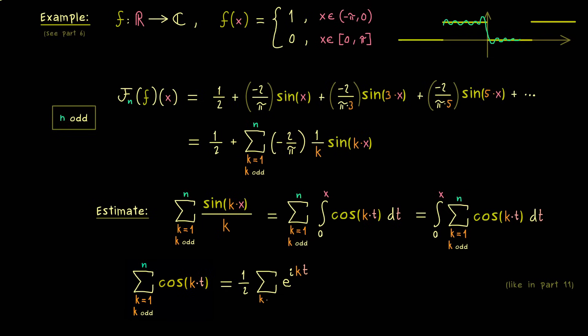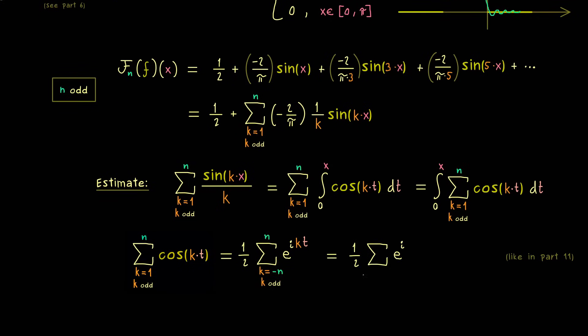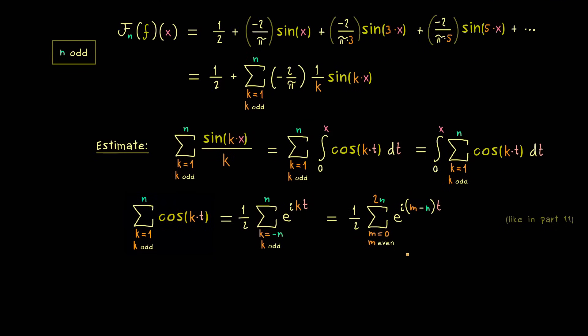And since we get two exponential functions, one with a minus sign one with a plus sign, we can just go with the sum from minus n to plus n. But please don't forget we still just sum up the odd case. Okay, then quickly the next step: there we want to shift the sum by n so now we sum from 0 to 2n. Which means inside the exponential function we have m minus n. And moreover, since m is defined as k plus n, so the addition of two odd numbers, we now sum up the even numbers.